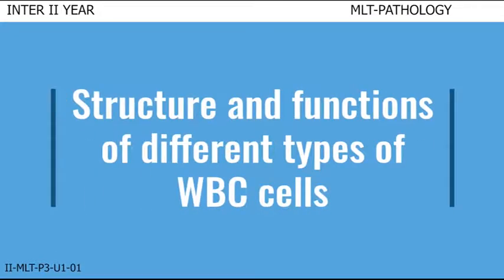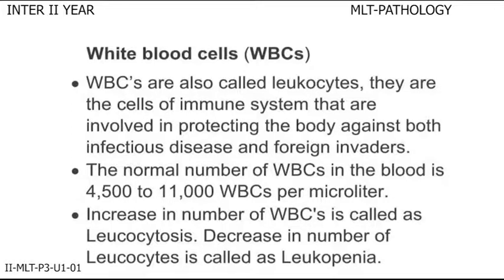Let us discuss the structure and functions of different types of WBC cells present in the blood. White blood cells, also called leukocytes, are the cells of the immune system that are involved in protecting the body against both infectious disease and foreign invaders. The normal number of WBCs in blood is 4,500 to 11,000 WBCs per microliter. The increase in number of WBCs is called leukocytosis and decrease in number is called leukopenia.